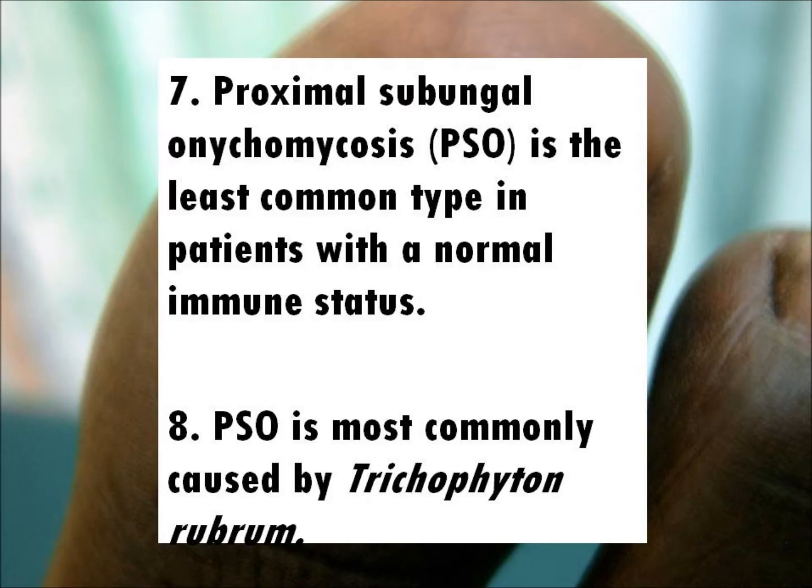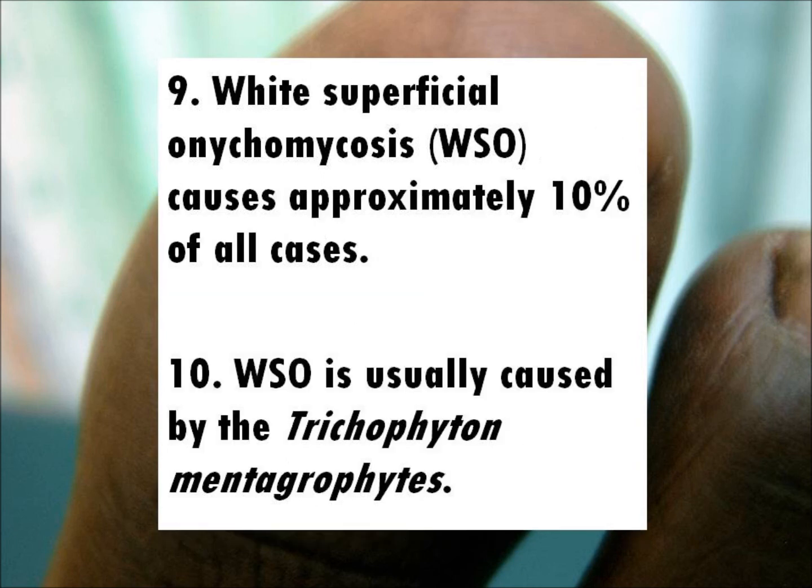Fact 7: Proximal subungual onychomycosis, or PSO, is the least common type in patients with a normal immune status. Fact 8: PSO is most commonly caused by Trichophyton rubrum.